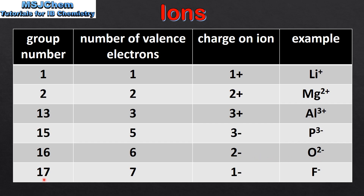An example is the oxide ion. And finally we have group 17. Elements in group 17 have 7 valence electrons. They can gain 1 electron to form 1- ions. An example is the fluoride ion. By either losing or gaining electrons, all these ions have achieved the electron configuration of a noble gas.